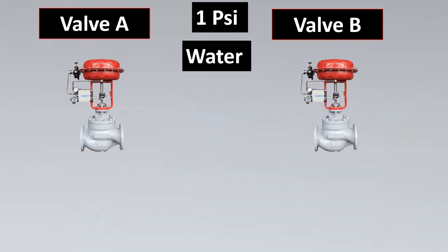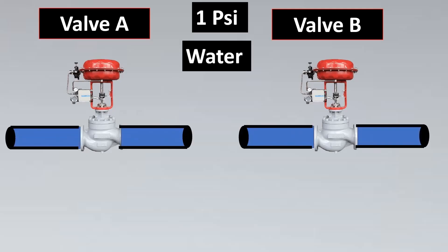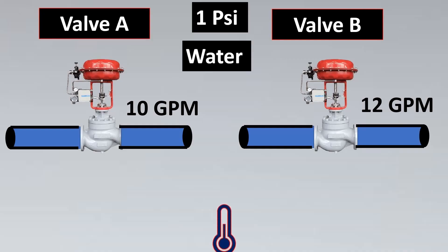Let us select water, because water is one of the most available substances and very easy to find at any site or vendor location. Now with the same pressure drop and the same liquid — water — for both valves, ideally I should get the same flow rate. But for this valve I get 10 GPM and for valve B I am getting 12 GPM. So there is another parameter which comes into play.